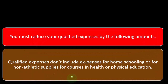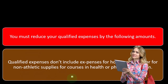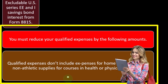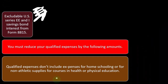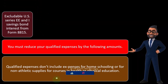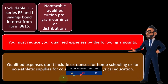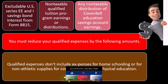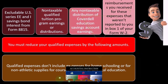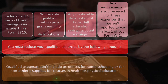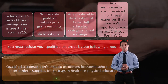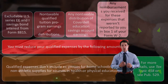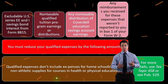Qualified expenses don't include expenses for homeschooling or for non-athletic supplies for courses in health or physical education. You must reduce your qualified expenses by the following amounts: excludable U.S. Series EE and I savings bond interest from Form 8815; non-taxable qualified tuition program earnings or distributions; any non-taxable distribution of Coverdell education savings account earnings; and any reimbursement you received for these expenses that weren't reported to you in box one of your Form W-2. For more information, use tax topic 458 or see Publication 529.